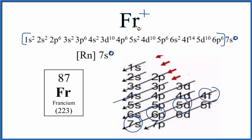Note that sometimes you'll see a slightly different order. For example, the 4S is sometimes written after the 3D. That's okay. Either way is correct. This is Dr. B with the electron configuration for Fr and Fr+. Thanks for watching.